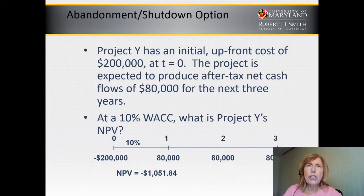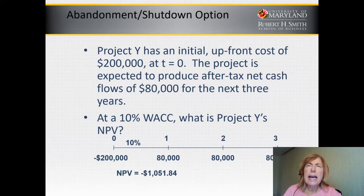Project Y has an initial upfront cost of $200,000 at time zero. The project is expected to produce after-tax net cash flows of $80,000 at the end of the next three years. At a 10% WACC, what is Project Y's NPV?